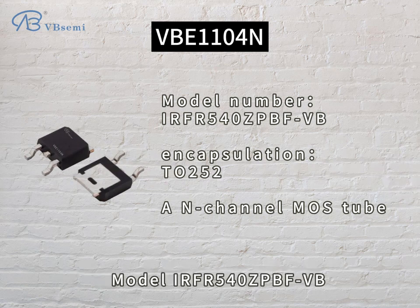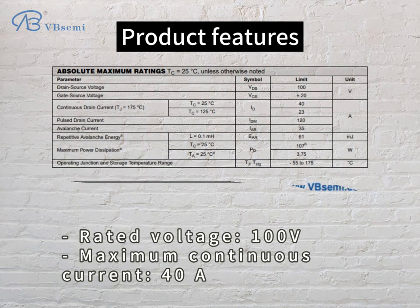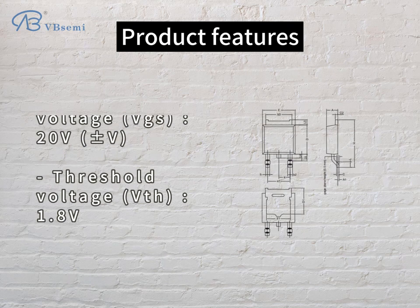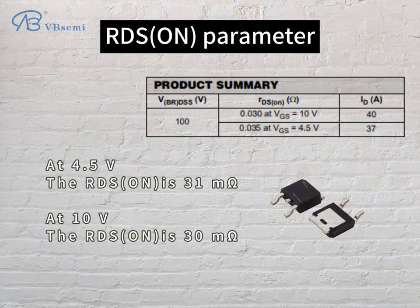Model: R4540ZPBFVB. Product features — Rated voltage: 100V, Maximum continuous current: 40A, Gate-source voltage VGS: 20V, Threshold voltage VTH: 1.8V. RDS(on) at 4.5V is 31 mΩ.